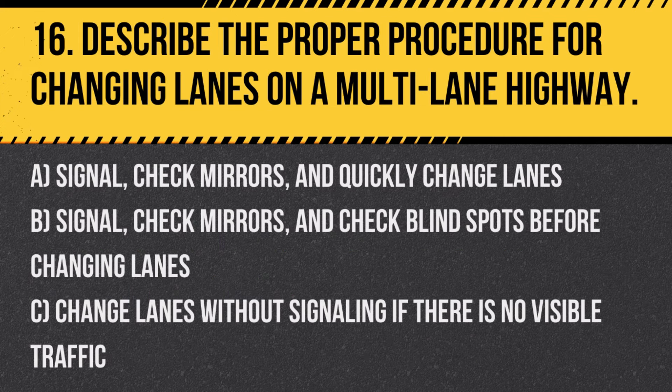Question 16: Describe the proper procedure for changing lanes on a multi-lane highway. A. Signal, check mirrors, and quickly change lanes. B. Signal, check mirrors, and check blind spots before changing lanes. C. Change lanes without signaling if there is no visible traffic. Answer: B. Signal, check mirrors, and check blind spots before changing lanes. This ensures the move is made safely without causing disruption to the traffic flow.